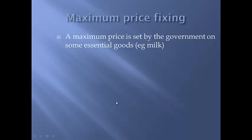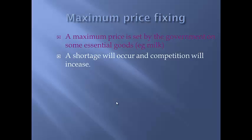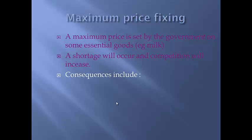Let's have a look at the opposite side, the maximum pricing, and that is there for consumers. Governments sometimes set maximum pricing, for example they did it with milk and some essential goods. In this instance because the maximum price is set below the equilibrium price, a shortage will occur and competition will increase.